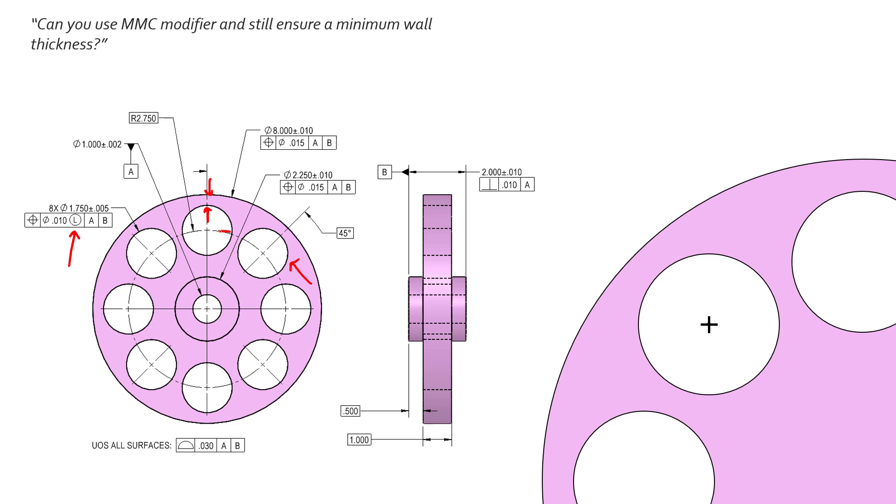Now that wall thickness can be from there to there or from here to here, but we're ensuring a worst case scenario when size and location stack up. What's that minimum wall? And now let's make sure we hold that at worst case.